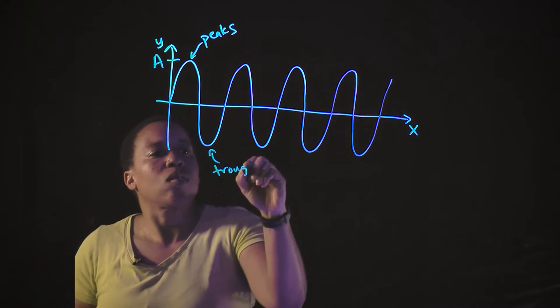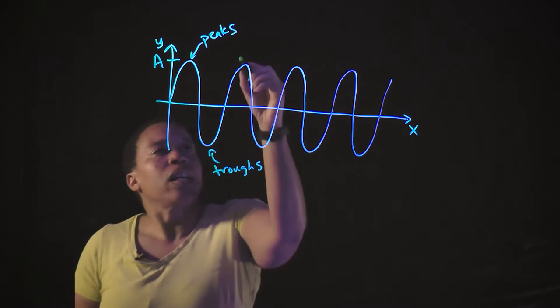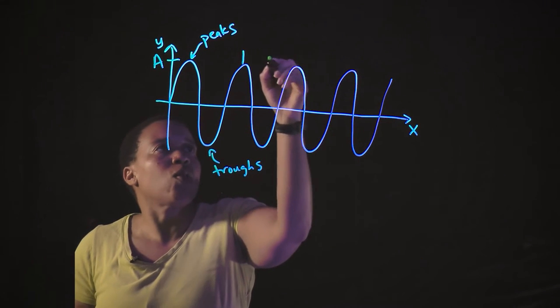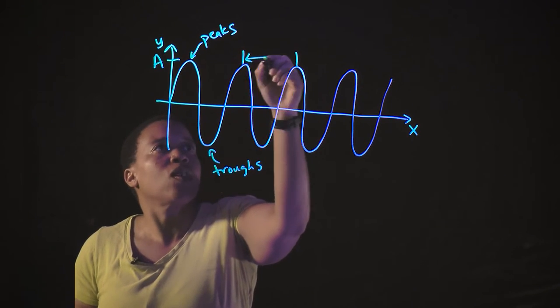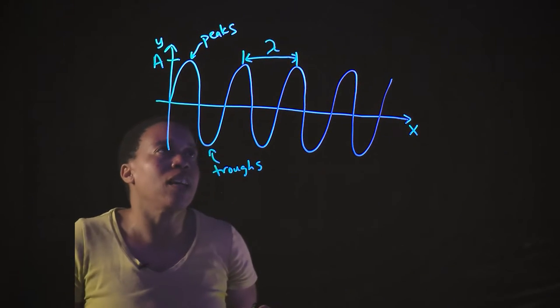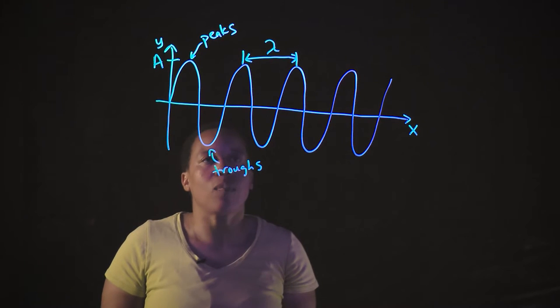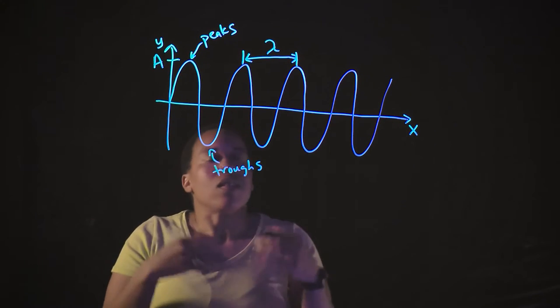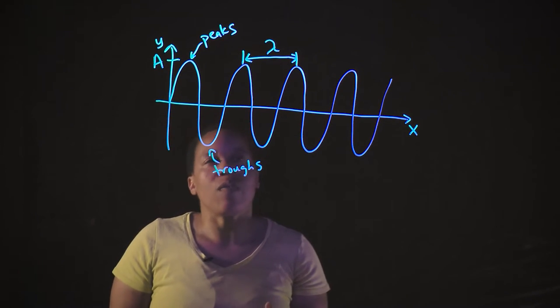And then it's helpful to keep track of the distance between the peaks or the distance between the troughs, and we call this distance the wavelength represented by the Greek letter lambda, and so this is a common representation of a wave that you would see.